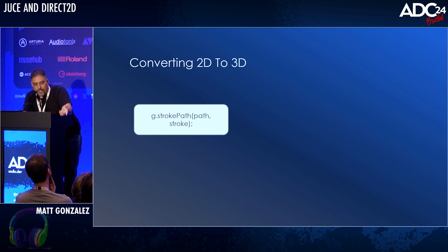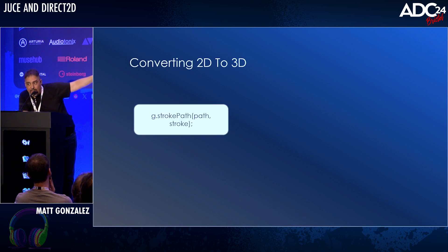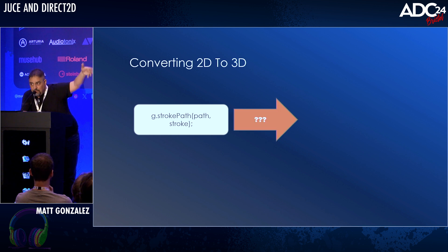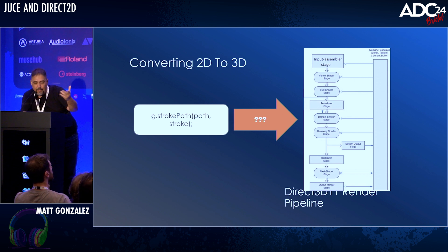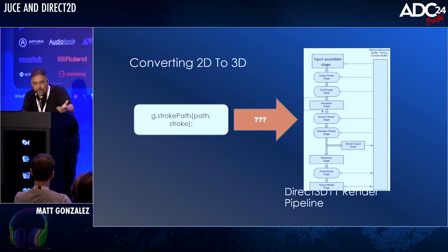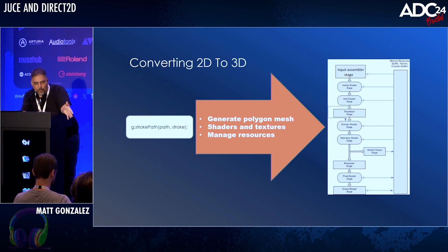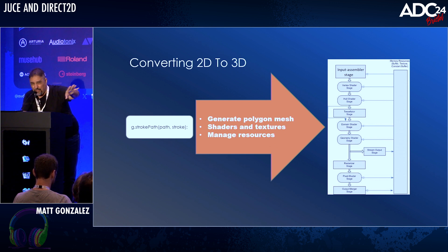In practice, the goal is to take a standard JUCE API call — say, we want to stroke a path — and feed it into a rather complex rendering pipeline, like Direct3D 11 on Windows. What we need to do is generate a polygon mesh, have shaders and textures to paint stuff on those polygons, and manage the resources for that pipeline. This is massively oversimplified, but we only have 18 minutes.